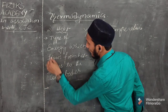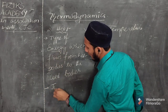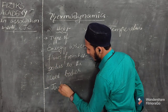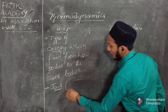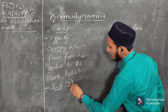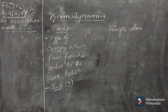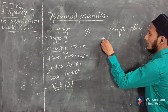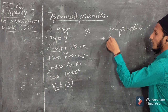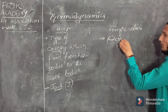So heat is a type of energy which flows from hot bodies to cold bodies. As it is a type of energy, the unit for heat energy is Joules, represented by the symbol J.